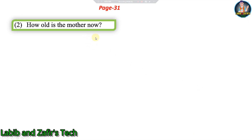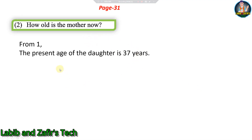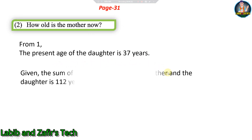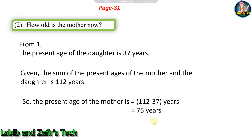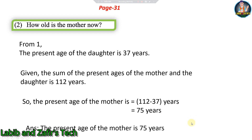Second sub-question: How old is the mother now? From the previous question, the present age of the daughter is 37 years. The question states the sum of present ages of mother and daughter is 112 years. So we subtract 37 from 112 to find the mother's age. Present age of mother = 112 minus 37 = 75 years.